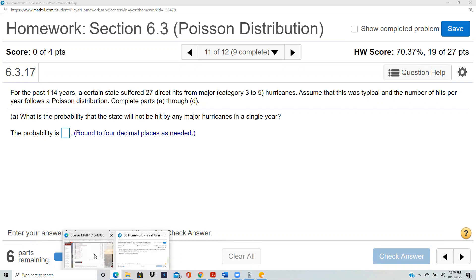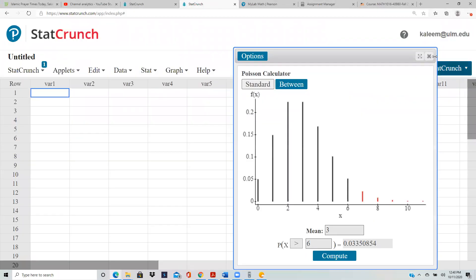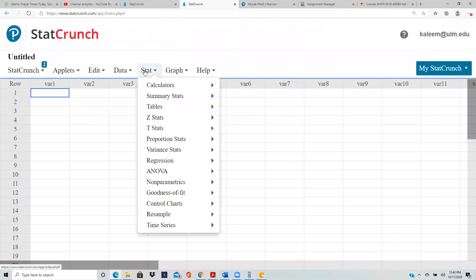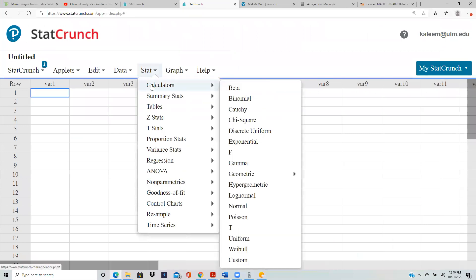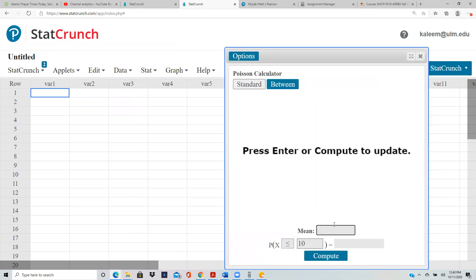Okay, so let's do it again. Stats, calculator, Poisson. So mean is 27 divided by 114.